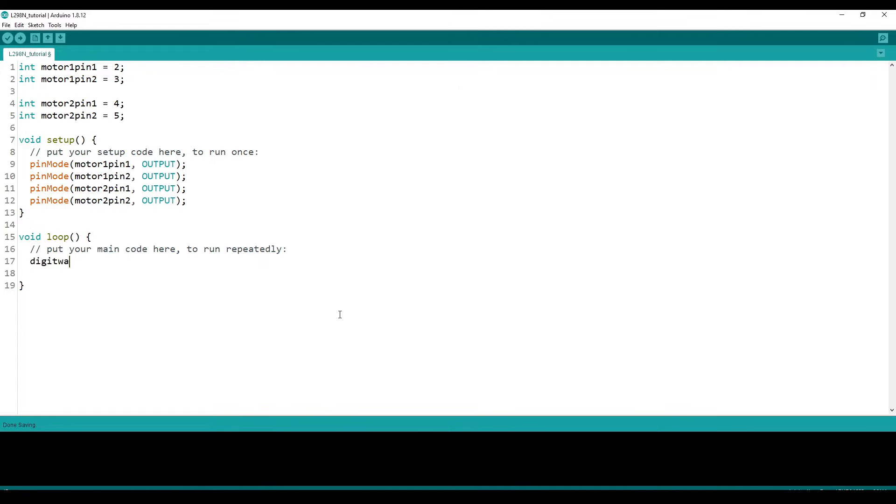To make motor 1 spin one direction, we set pin 1 to high and pin 2 to low and we'll do that for one second. To make it spin the other direction, we set pin 1 to low and pin 2 to high and we'll do that for one second as well.